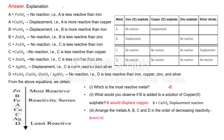From the table: when A is added to FeSO₄, no reaction occurs — A is less reactive than iron. When A is added to CuSO₄, displacement occurs — A is more reactive than copper. When B is added to FeSO₄, displacement occurs — B is more reactive than iron.